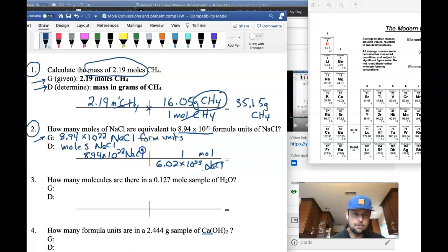And again, if we cancel out the number of NaCls, we'll get an answer in the number of moles. And this answer ends up being 0.149 moles of NaCl, which makes sense because 8.94 times 10 to the 22nd is smaller than 6.02 times 10 to the 23rd, so we get an answer that's a fraction of a mole.